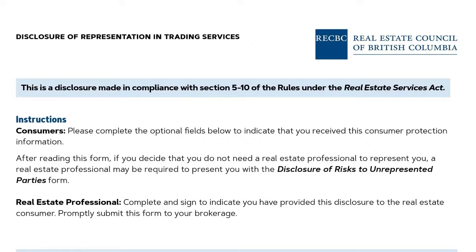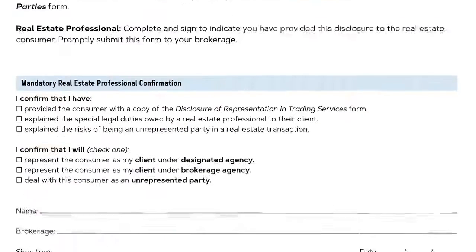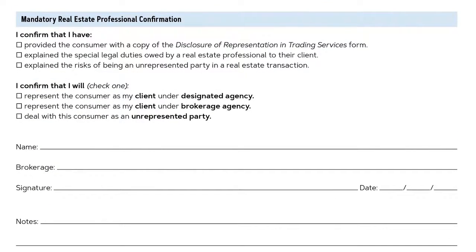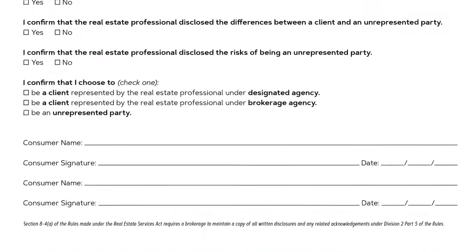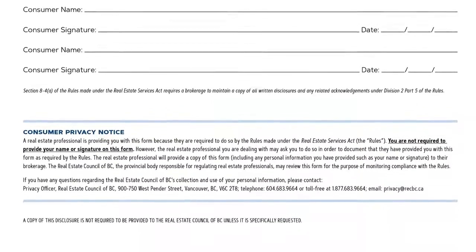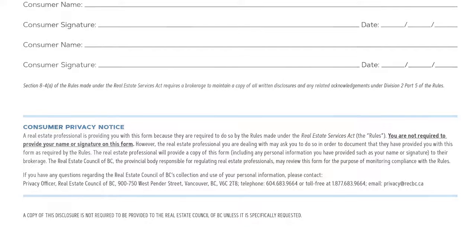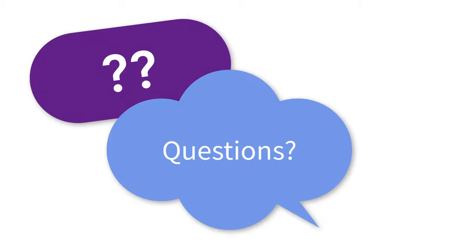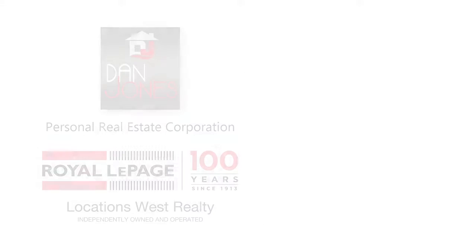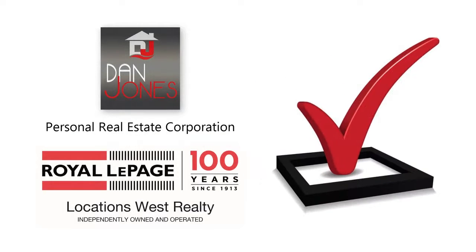The purpose of the last two pages of the Disclosure of Representation in Trading Services form is to document that the disclosure has been made to you, the consumer. It includes a mandatory checklist and name signature field that the licensee will complete, as well as an optional checklist and name signature field that may be completed by the consumer. Our brokerage requires that anytime we are providing trading services, the form must be completed by the consumer. Please ask Dan Jones of Royal LePage Locations West Realty any questions you may have. Once he has answered your questions, you can determine how you'd like to complete the form, enabling Dan to provide you with appropriate trading services.